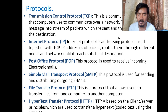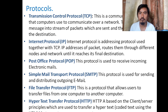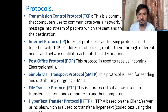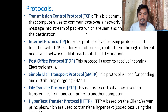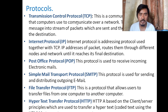TCP/IP is the communication protocol that computers use to communicate over a network. TCP divides data into a stream of packets which are sent and then reassembled at the destination. Without TCP, your computer cannot connect to the network. IP (Internet Protocol) is an addressing protocol used together with TCP — it addresses packets and routes them through different nodes in a network until the data reaches its final destination.